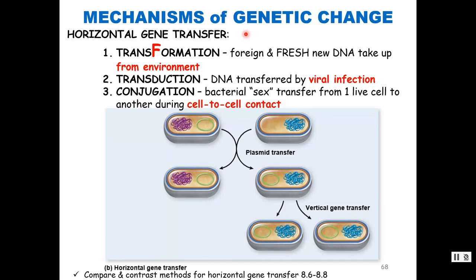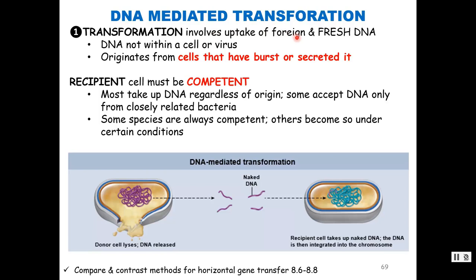There are three methods of horizontal gene transfer bacteria use: transformation, transduction, and conjugation. These transfer genes between bacteria in the same generation — horizontal transfer. Vertical gene transfer is when genes are transferred from parent cells to daughter cells.